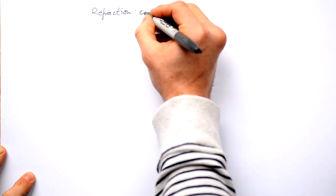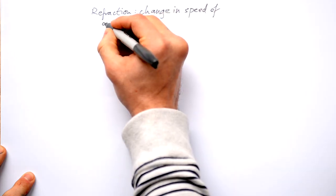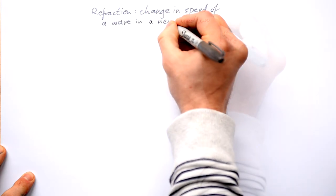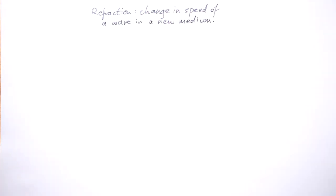Let's talk about refraction. Refraction is the changing of speed of a wave in a new medium. Medium just means the thing that the wave is traveling in. For sound, the medium could be air, water, or a solid. For light, people used to think there was a physical medium called the ether, but that was quickly dismissed — look up the Michelson-Morley experiment. You could say that the medium for light is space itself.